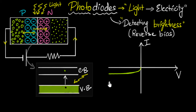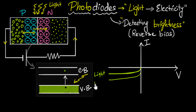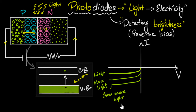What happens if you increase the light? With more light, the graph looks similar but has more current in the negative direction. With even more light, the curve shifts further. The current level tells us how much light is falling on the diode — each light level produces a distinct curve on the VI characteristics graph.